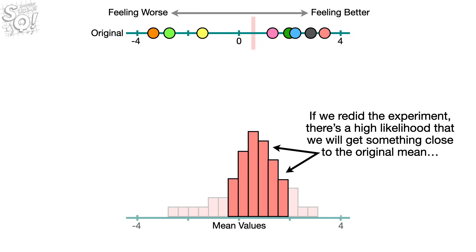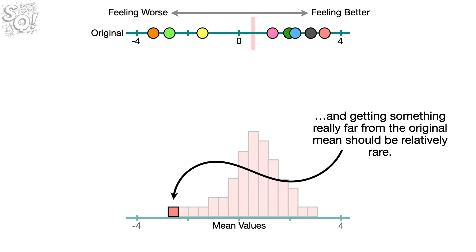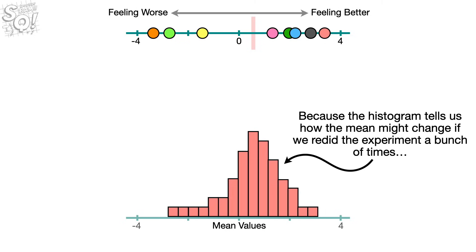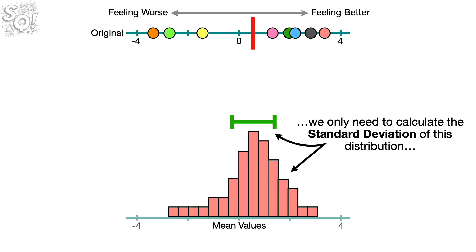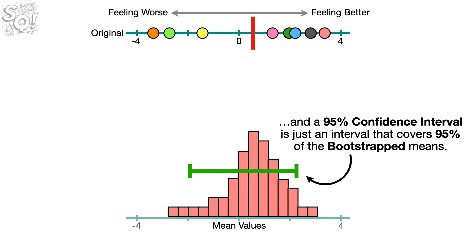Just by looking at the histogram, we can get a sense of what might happen if we redid the experiment. If we redid the experiment, there's a high likelihood we will get something close to the original mean. And getting something really far from the original mean should be relatively rare. Because the histogram tells us how the mean might change if we redid the experiment a bunch of times, if we want to know the standard error of the mean value from the original dataset, we only need to calculate the standard deviation of this distribution. And a 95% confidence interval is just an interval that covers 95% of the bootstrap means.